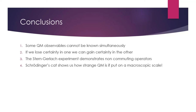The conclusions for this section are that we can't know some observables at the same time, we can evaluate the commutator to determine whether we can know two observables simultaneously, and we can trade off knowledge of one observable to gain knowledge of another. We used the Stern-Gerlach experiment to demonstrate these principles, and discussed Schrödinger's cat to illustrate the weirdness of quantum mechanics at a macroscopic scale. In the next class period, we'll begin to look at quantum mechanical vibration, our first application into spectroscopy.